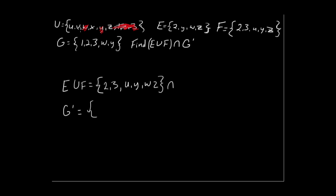Okay, so then that leaves us with U, V, X, and Z. So that's G complement, that's everything that's not in G but is in the universal set. So down here we'll go ahead and write what's in G complement, which we just figured out is U, V, X, and Z.